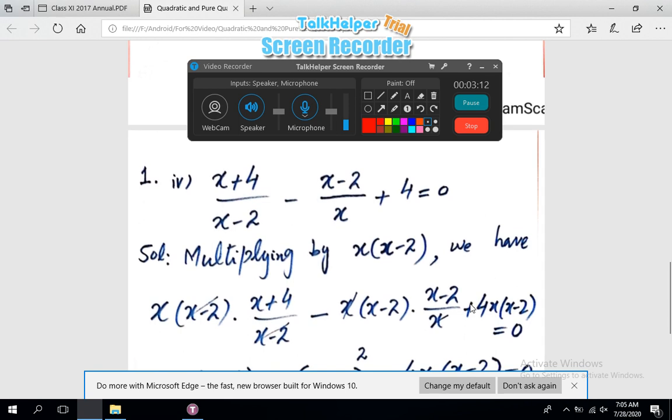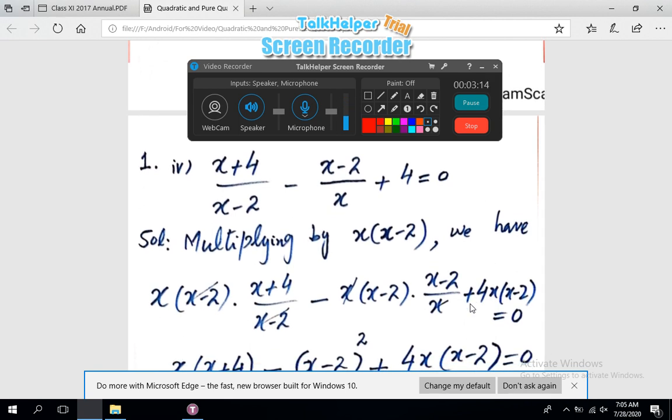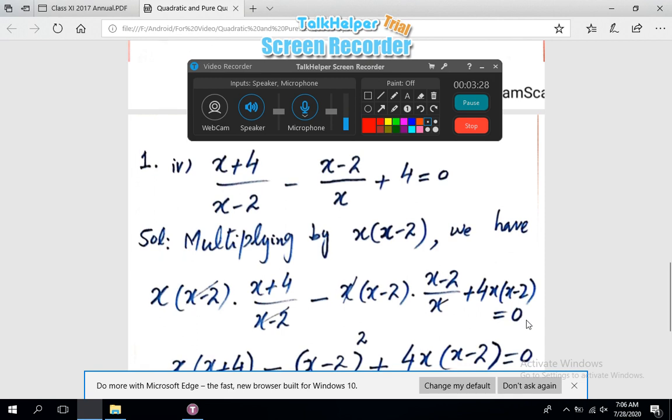We start our solution by multiplying by the LCM, that is LCM is x(x - 2). Multiplying by LCM the first term, the second term, plus third term 4 into the LCM is equal to 0.